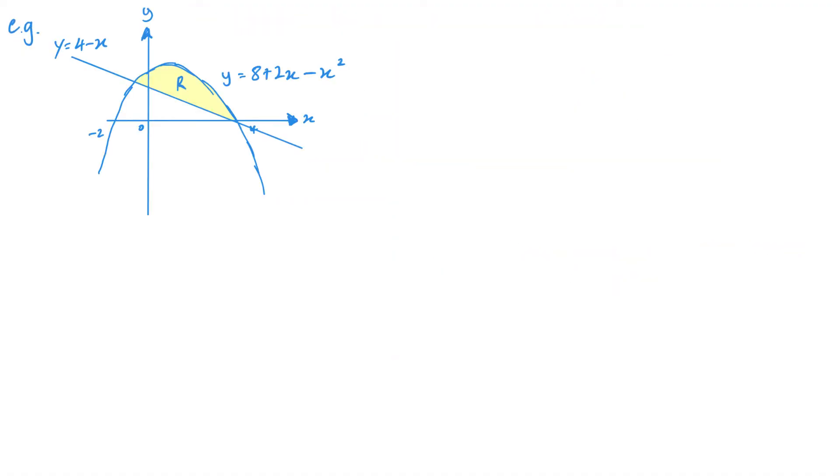So here's an example where we want to find this shaded region R. Now, first step is to find the two points of intersection. I'm pretty sure that this B does hit the x-axis at 4. It looks that way, but you should always make sure. And we need to find A anyway. So what I need to do is equate these two lines. So 4 minus x equals 8 plus 2x minus x squared. So that's going to give me, I'm going to take everything to the left, x squared minus 3x minus 4 equals 0.